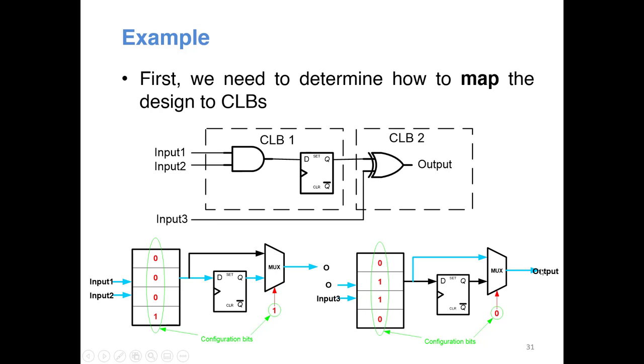The second part maps to the second CLB. I need an XOR gate, so I store 0110 to emulate an XOR gate. The output comes directly from the gate, so I need to bypass the flip-flop. I make the MUX control signal 0 so that the flip-flop is bypassed and the output from the LUT comes directly as the CLB output. All these bits — the LUT content and the MUX control bit — together are called the configuration bits.